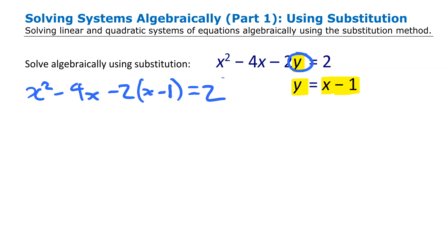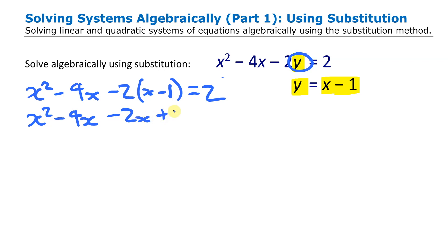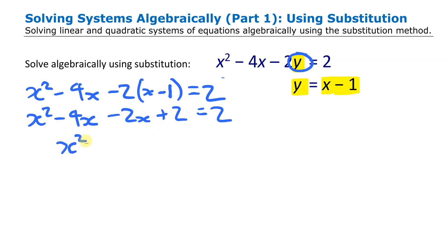You want to multiply that out first to eliminate the brackets. We get minus 2x and plus 2, because we have minus times minus. Combining terms gives x squared minus 6x. With a plus 2 on both sides, subtracting 2 from both sides cancels them out, leaving x squared minus 6x equals zero.